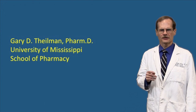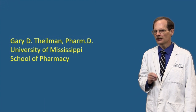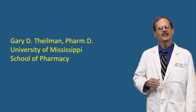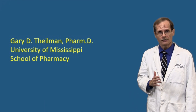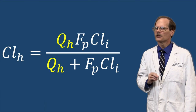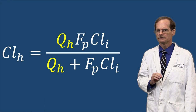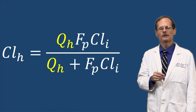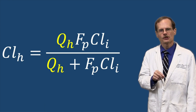Let's look into more factors that affect how quickly the liver can clear drug from the body using the well-stirred model. This time we're going to explore hepatic blood flow, represented in the equation as Q sub H.